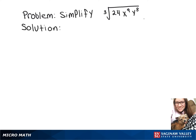To simplify this expression, we want to break the parts up into things that we can simplify more easily. So we have the cube root of 24, we can split into 8 times 3, since 8 is a perfect cube.